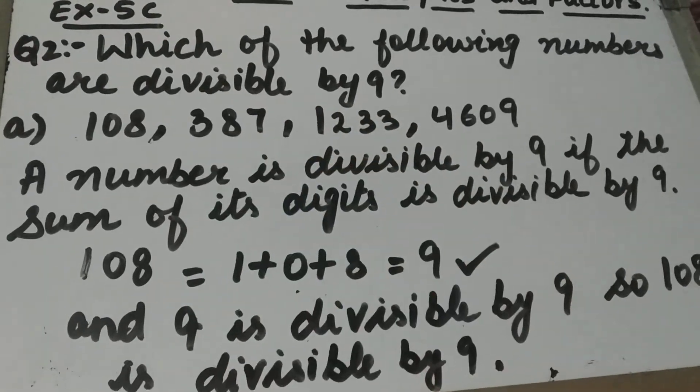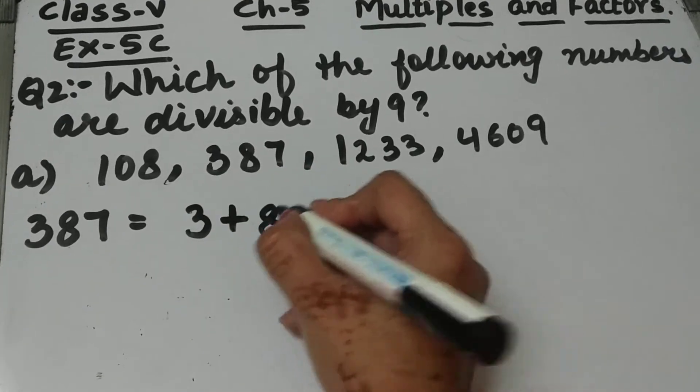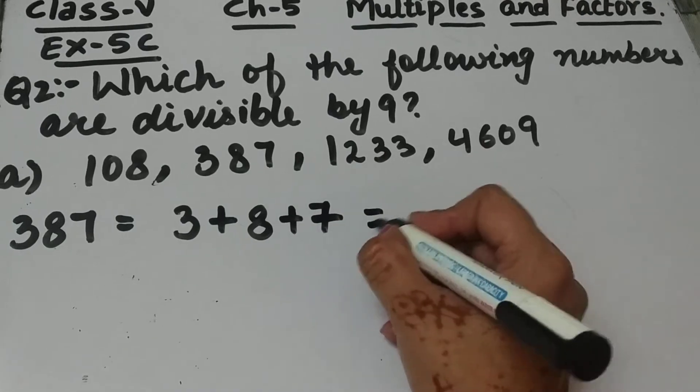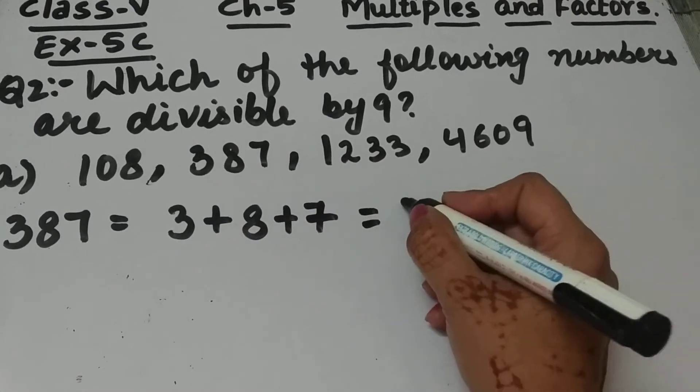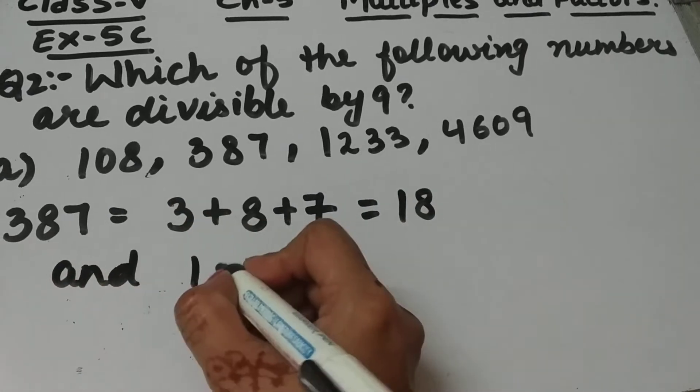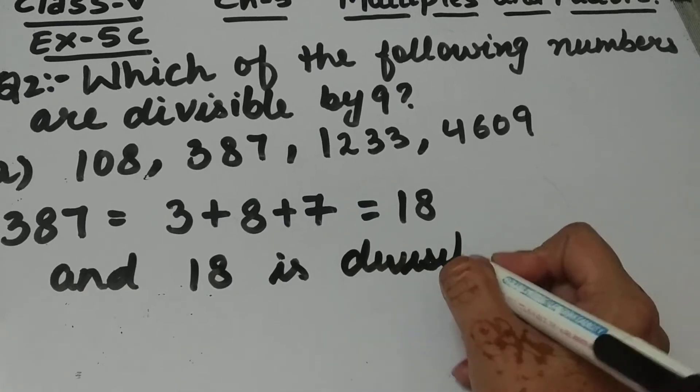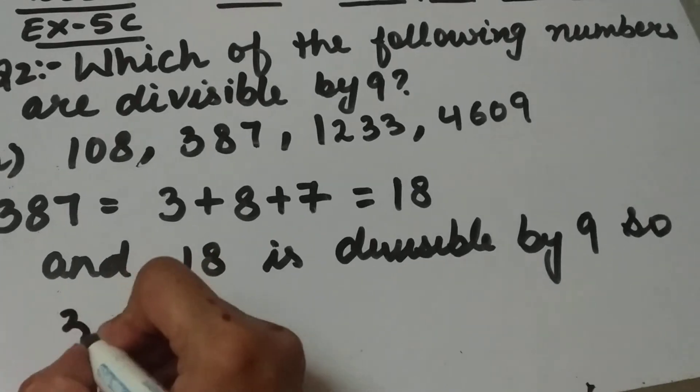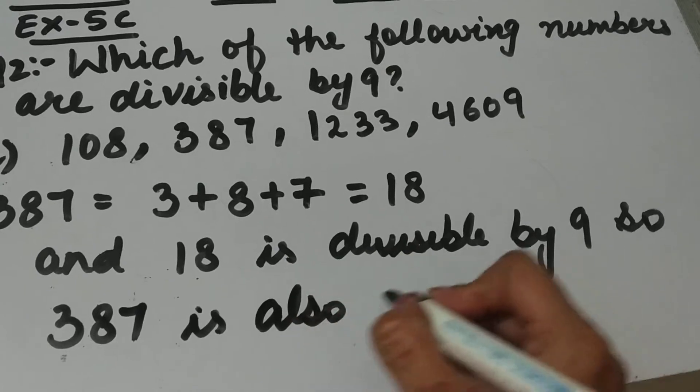The second number is 387. Add the digits: 3 plus 8 plus 7. When we add these, 8 plus 3 is 11, and 11 plus 7 is 18. 18 is divisible by 9, so 387 is also divisible by 9.